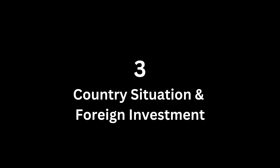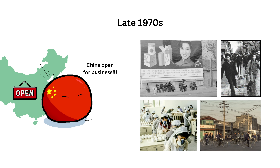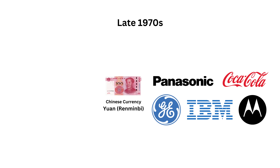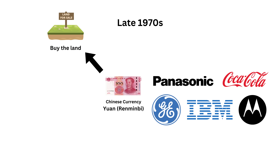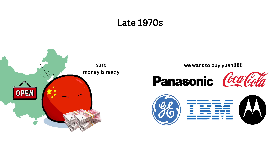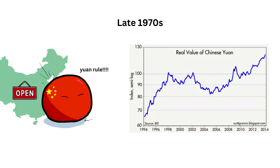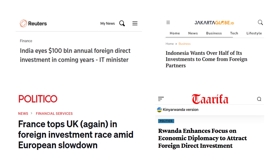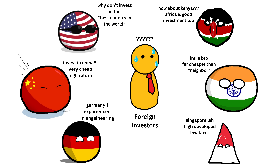Section 3: Country Situation and Foreign Investment. When China opened up its market in the late 1970s to foreign investors, lots of foreign companies started to open their business in China. If they wanted to open factories in China, of course they needed Chinese currency, which is yuan or renminbi, to buy the land, build the factories, pay the workers and other expenses. So, it just creates more demand for Chinese yuan, makes the yuan value stronger and gives China lots of money.